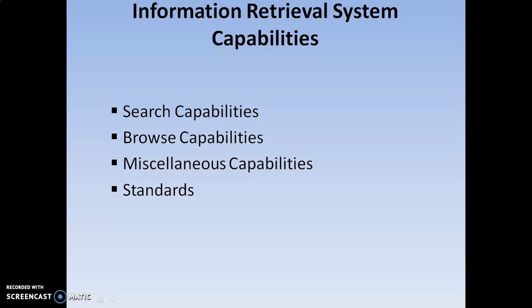Now in this video, I am going to discuss the capabilities of information retrieval systems — especially the search capabilities. The capabilities are normally divided into 4 different types: search capabilities, browse capabilities, miscellaneous capabilities, and standards used for information retrieval systems. In this video, I am going to discuss the search capabilities.